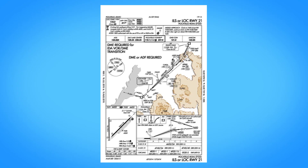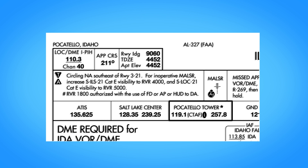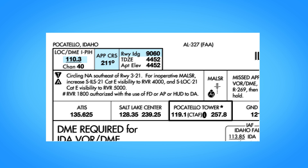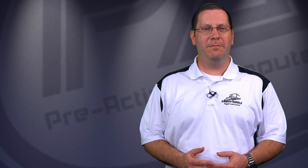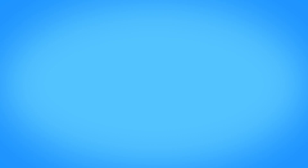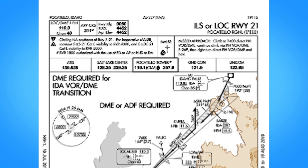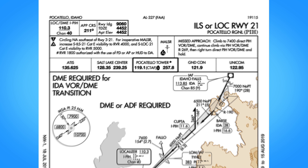Looking back at Pocatello, we can see that in the top of the pilot briefing the localizer frequency is 110.3, the approach course is 211 degrees, and the runway is 9,060 feet long. Both the touchdown zone elevation and airport elevation are 4,452 feet. Next are the notes, which provide pertinent information for the approach. In this case, due to the nearby mountains, circling isn't authorized to the southeast for runways 3 and 21. It also contains notes instructing what to do in the event of an inoperative approach lighting system.